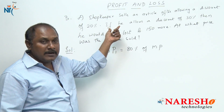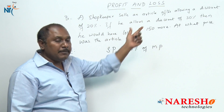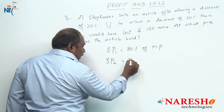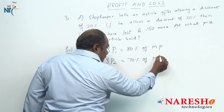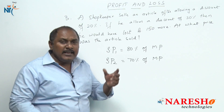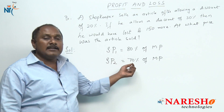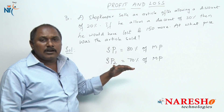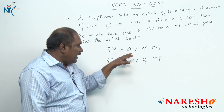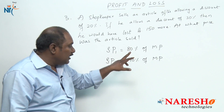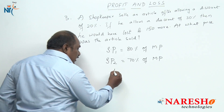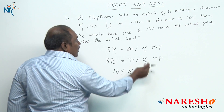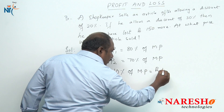The next part is the conditional statement: if he allows a discount of 30 percent, then the selling price should be 70 percent of marked price. Initially he sold at 80 percent of marked price; now he is selling at 70 percent of marked price, so he will be losing some money. With respect to percentage, he is losing 10 percent of marked price. This 10 percent of marked price equals 150 rupees.